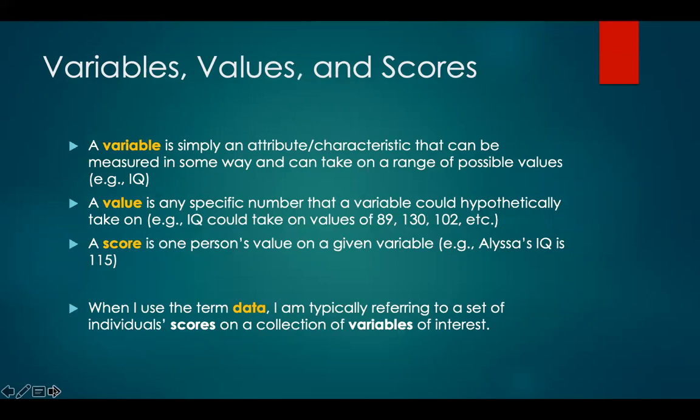In this course, three terms you're going to hear a lot about are variables, values, and scores. A variable is simply an attribute, characteristic, or trait that can be measured in some way and can take a range of possible values — a good example is IQ or the intelligence quotient. A value is any specific number that a variable could hypothetically take on; for example, IQ could take on values of 89, 130, 102, etc. A score is one person's value on a given variable — for example, Alyssa's IQ is 115. When I use the term data, I am typically referring to a set of individual scores on a collection of variables of interest.